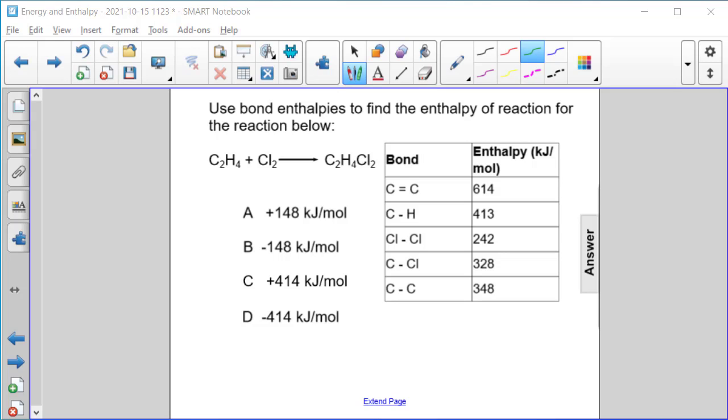Use bond enthalpies to find the enthalpy of reaction for the reaction below: C2H4 plus Cl2 produces C2H4Cl2. So I'm going to start with Lewis structures.